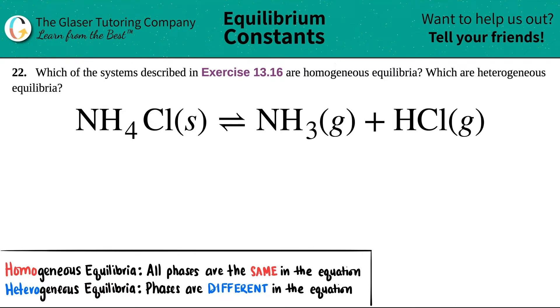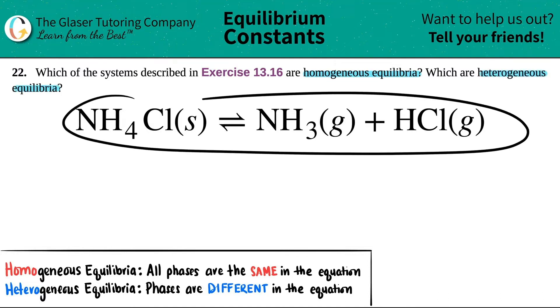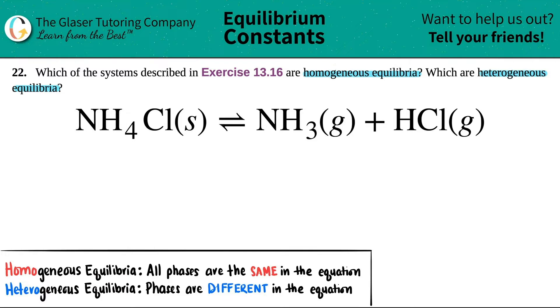Number 22, which of the systems described in exercise 13-16 are homogeneous equilibria and which are heterogeneous equilibria? I pulled up one of the balanced equations from that exercise list.